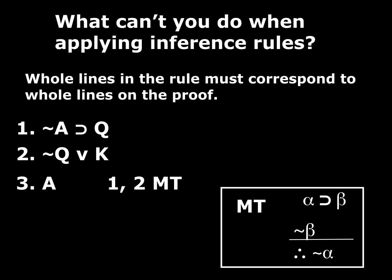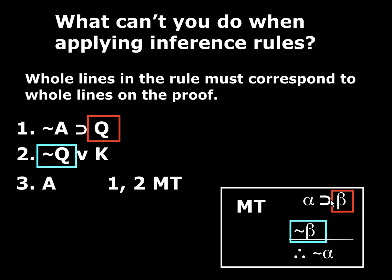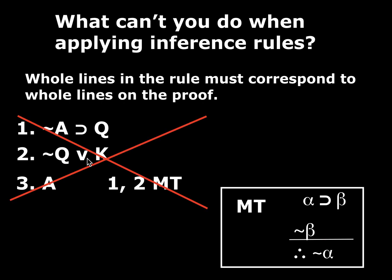Now, what you couldn't do is something like this. Someone might look at a conditional and think, the antecedent is Q, and here's not Q — that's the negation of this antecedent — so I can do modus tollens on lines one and two to get the negation of the consequent, and then derive the negation of the antecedent. Well, you can't do this. Because if you look at the rule, it says you have to have a conditional and the negation of the consequent, and that negated consequent has to be the whole line. Here, the negated consequent isn't the whole line — it's just one component of a disjunction. So you can't do that.